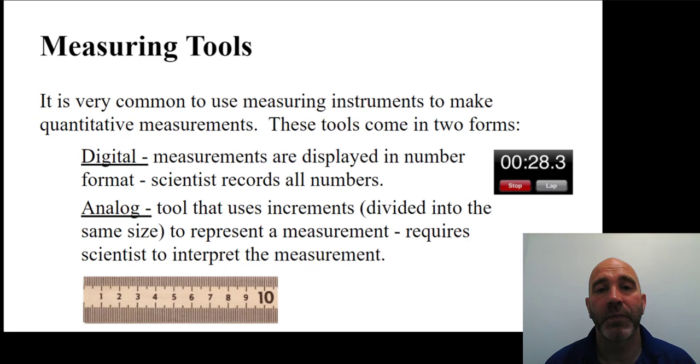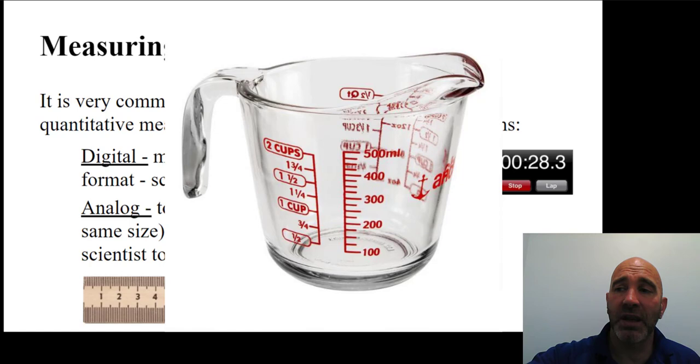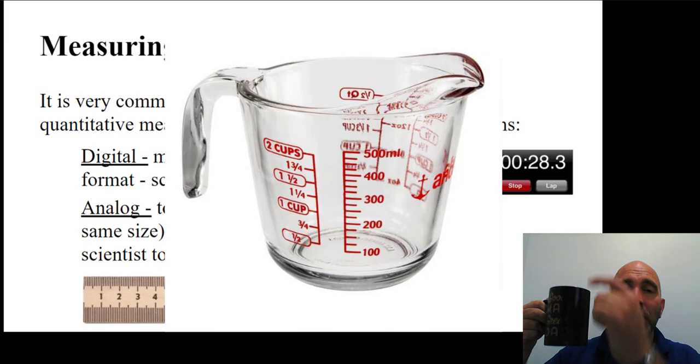Here is an example of one that we use in science class quite a bit. This is a meter stick, and it has many, many, many different lines. But you probably have something in your kitchen that you pour liquid into,